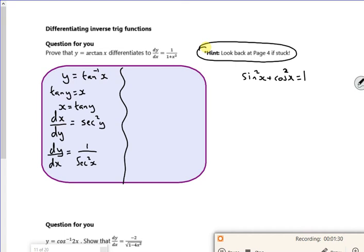If I divide this by cos squared, I get sine squared over cos squared is tan squared. Cos squared over cos squared is 1. 1 over cos squared is secant squared.